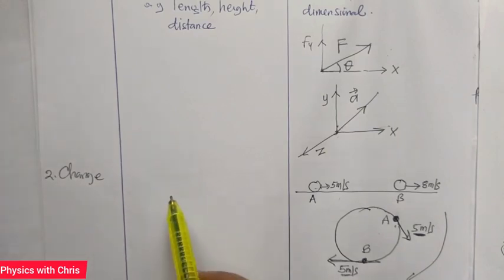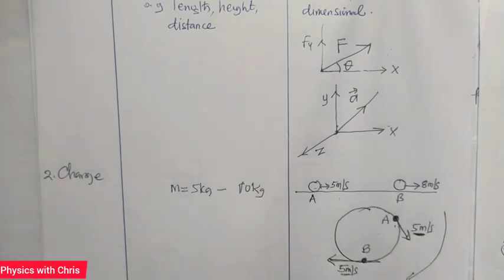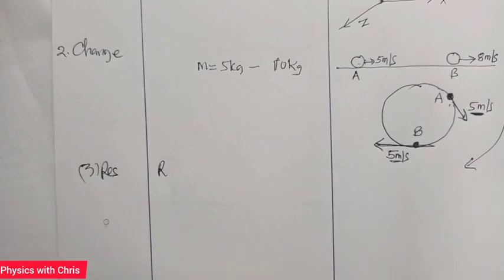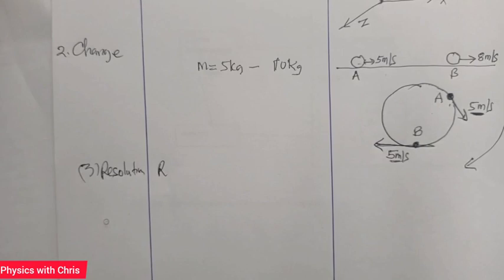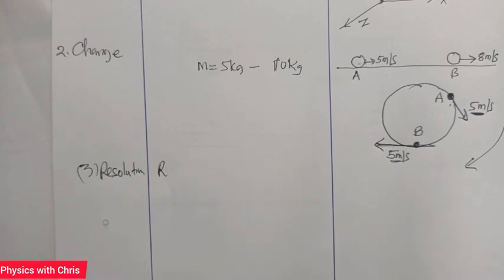For a scalar, if the mass of a body changes from five kilograms to ten kilograms, only the magnitude has changed, so the scalar quantity has changed. The third difference is resolution. A scalar quantity cannot be resolved as it has the same value irrespective of direction. But a vector quantity can be resolved in any direction using the sine or cosine of the angle it makes with the x-axis, into two, three, or more components. In one of my videos I took time to explain the resolution of a vector.